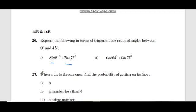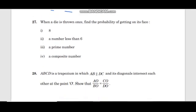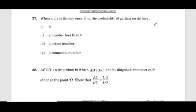Question 27: When a die is thrown once, find the probability of getting on its face: 8, a number less than 6, a prime number, a composite number. Question 28: ABCD is a trapezium in which AB is parallel to DC and its diagonals intersect each other at the point O. Show that AO by BO equals CO by DO.